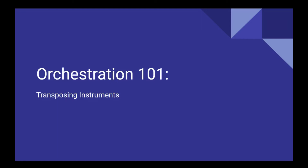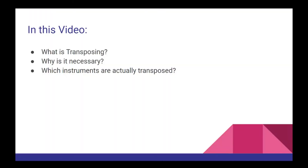Welcome to the 11th video in this orchestration series. In our last video, we discussed some specific strategies for orchestrating your music for woodwind instruments, including common roles, effective ranges for solos, and blending chords. In this video, we're going to finally cover a topic that admittedly should have probably been covered much earlier in this series. We'll discuss transposing, the reasons for it, and which instruments in the orchestra are actually transposed.